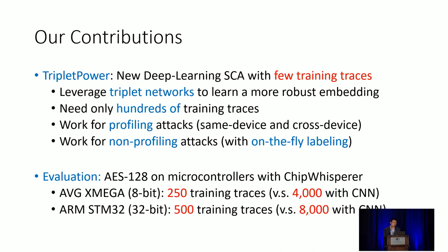In this study, we propose a new deep learning side-channel attack that requires a small number of training traces. The main idea is we leverage triplet networks to learn a more robust embedding. By doing that, we only need hundreds of training traces. Our method works for profiling attacks in both same-device and cross-device scenarios, and also works for non-profiling attacks when extended with on-the-fly labeling.